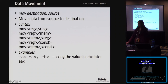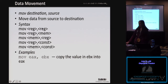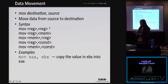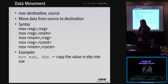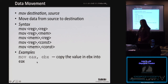The move instruction in Intel syntax starts with the destination, comma, then the source, and simply moves data from the source to the destination. There are specific combinations of operands allowed — notably you can't have two memory addresses. If you want to move from one memory address to another, you always need an intermediate step: move out of memory into a register, then move that register to the new memory location. A specific example is moving from EBX into EAX — copying the contents of EBX into EAX. Note that MOV is actually a copy; it does not remove the contents from EBX.